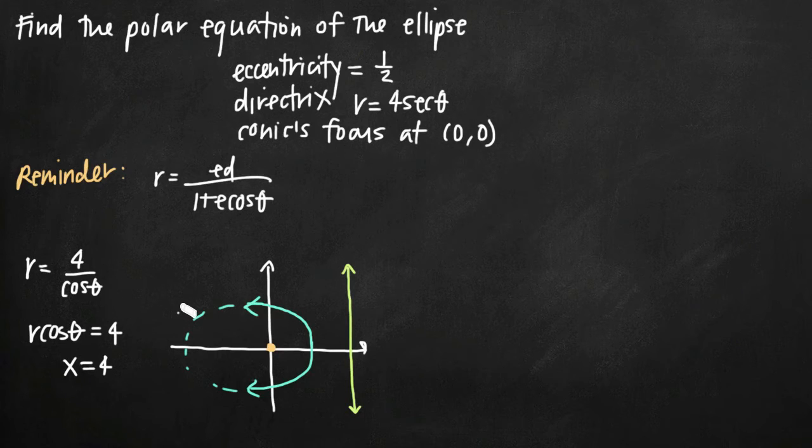If the orientation were different, the equation would change, but for our orientation, we use this equation. Now we just plug in the values we know, which is simple.